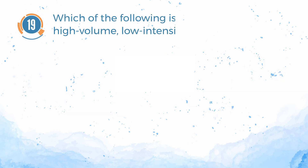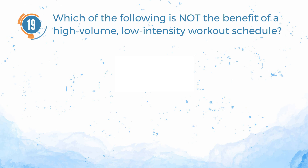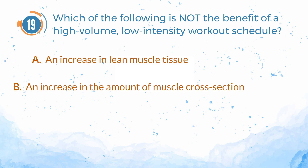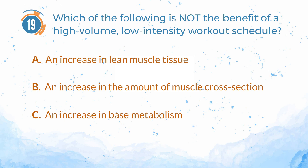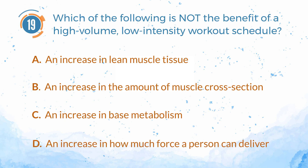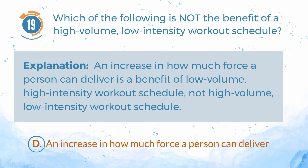Number 19. Which of the following is not a benefit of a high-volume, low-intensity workout schedule? A. An increase in lean muscle tissue. B. An increase in the amount of muscle cross-section. C. An increase in base metabolism. D. An increase in how much force a person can deliver. The answer is D. An increase in how much force a person can deliver is a benefit of a low-volume, high-intensity workout schedule, not a high-volume, low-intensity workout schedule.